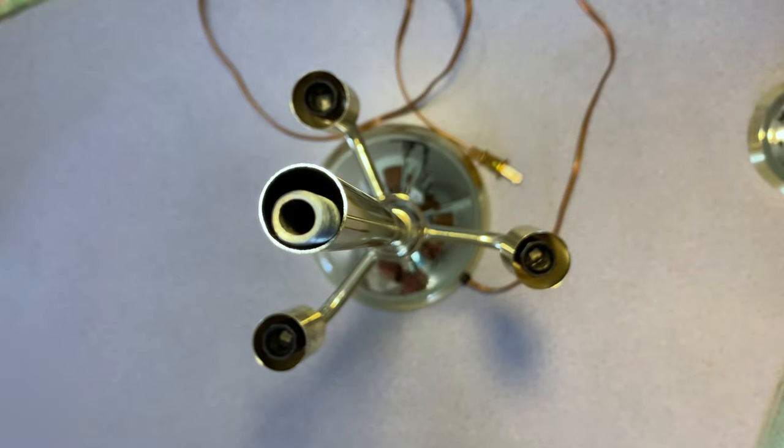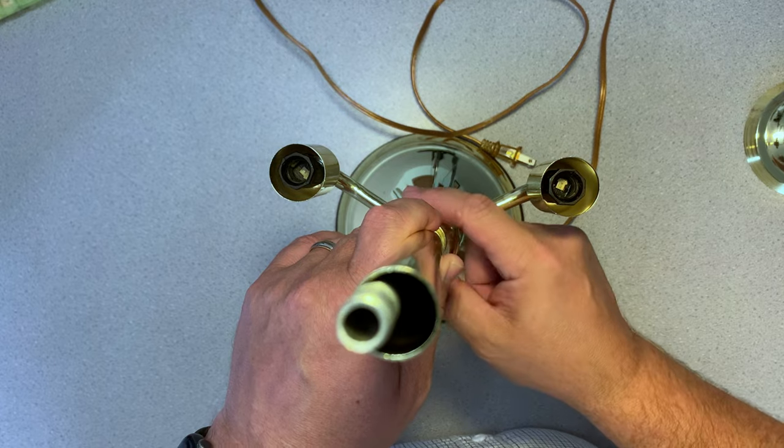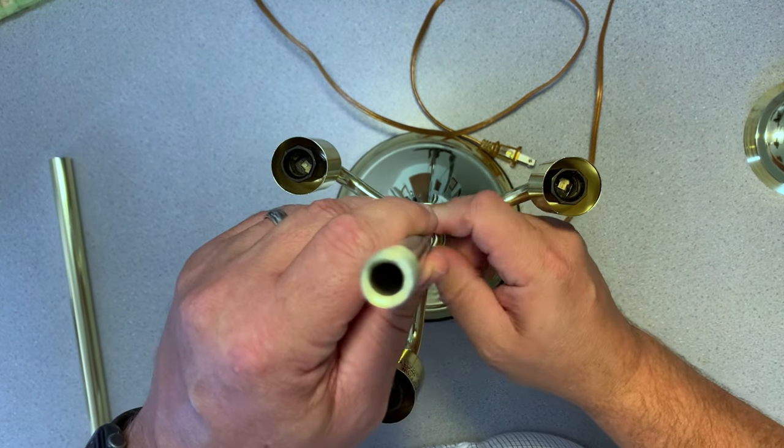Once we remove the frame of the shade, we can take the pipe off the center shaft. It's there to make things look good. It's hiding the tube where the power goes and holds the shade.